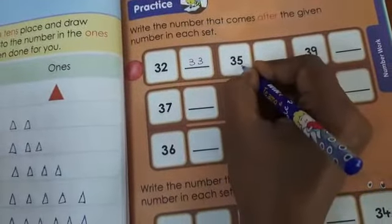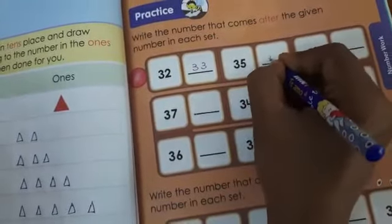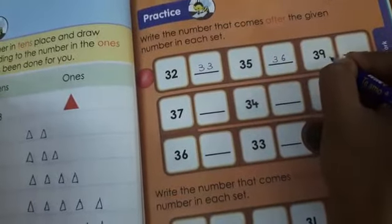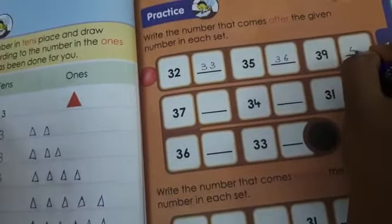Next. 3, 5, 35. The next number 36. 3, 9, 39. Next number 4, 0, 40.